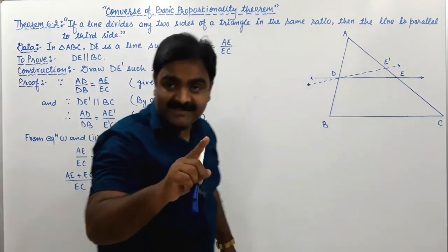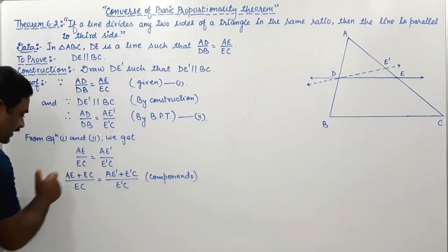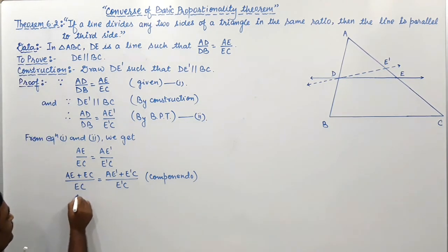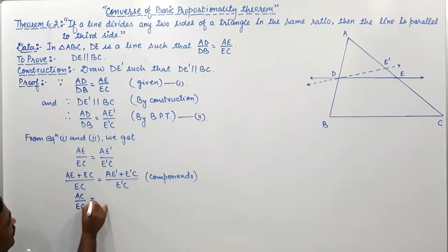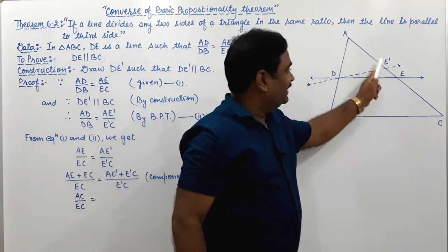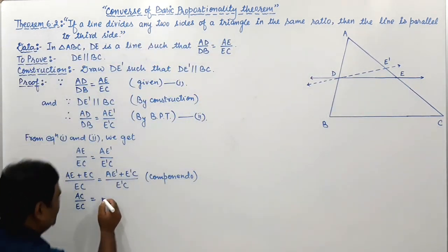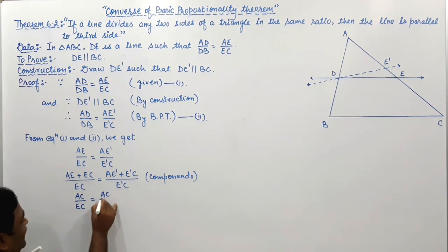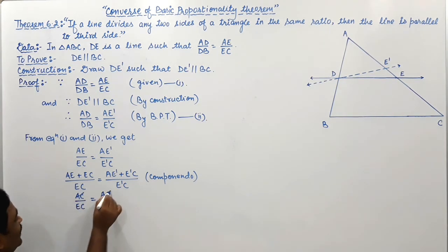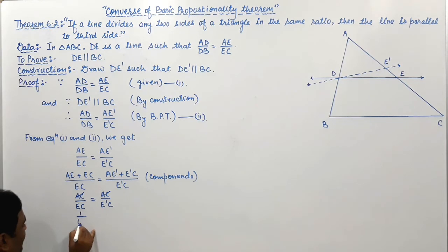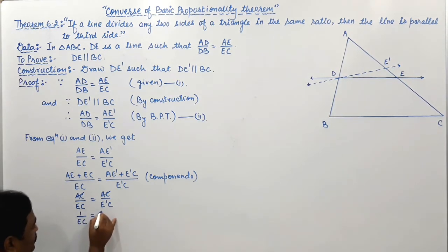Now AE plus EC can be written as AC. So the numerator becomes AC, giving AC upon EC. Similarly, AE' plus E'C can also be written as AC. So this becomes AC upon E'C. Now AC cancels from both sides, giving 1 upon EC equals 1 upon E'C.